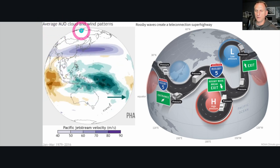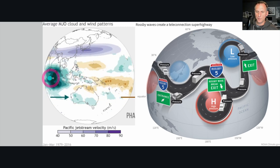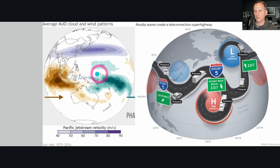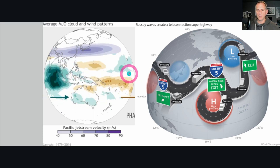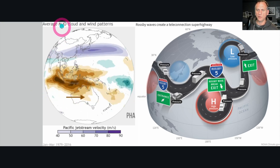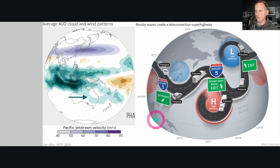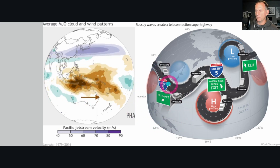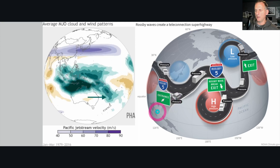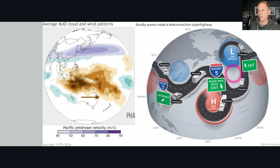You can see the average MJO cloud and wind patterns and how the jet stream is stronger at times depending on the phase of the Madden-Julian Oscillation as it tracks from west to east across the equatorial regions, circling around the planet back across Africa and the Indian Ocean. Sometimes the MJO is weak and nebulous and difficult to detect, making it hard to determine its impact. Where the MJO is, combined with El Niño or La Niña, makes a big difference with what we know as Rossby waves.